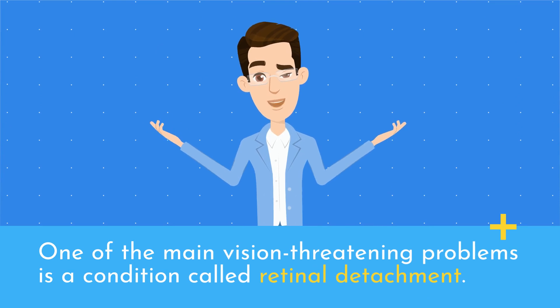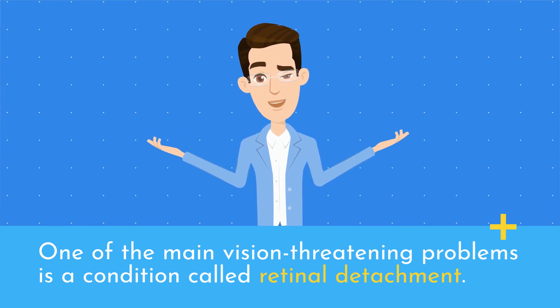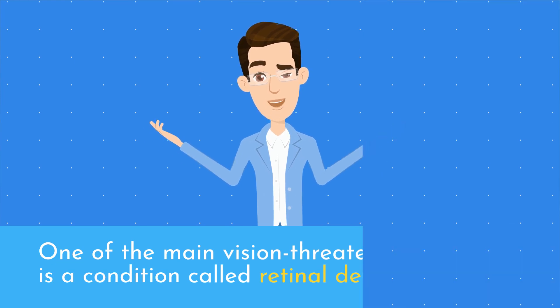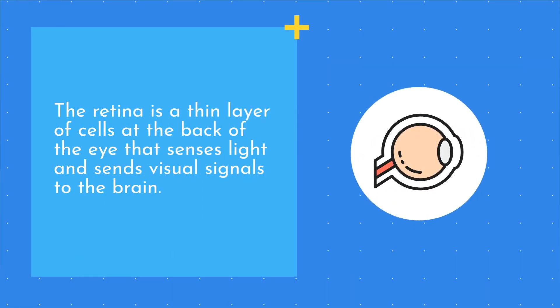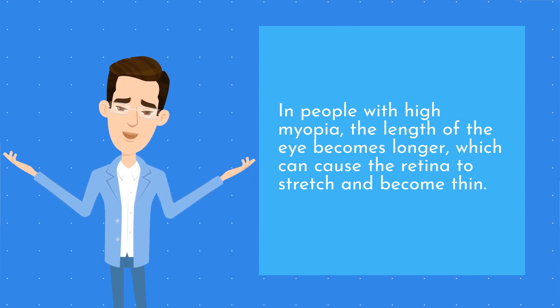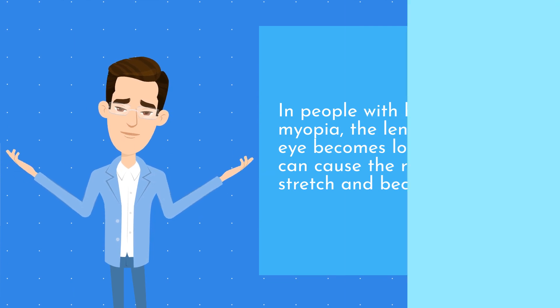One of the main vision threatening problems is a condition called retinal detachment. The retina is a thin layer of cells at the back of the eye that senses light and sends visual signals to the brain. In people with high myopia, the length of the eye becomes longer, which can cause the retina to stretch and become thin. This makes it more prone to detachment, which can lead to vision loss or blindness.